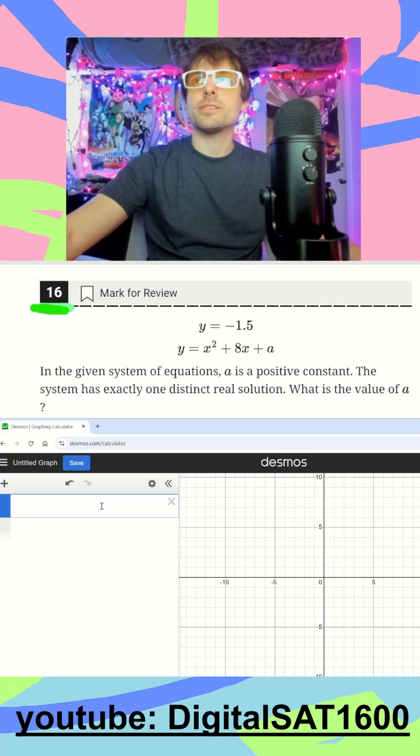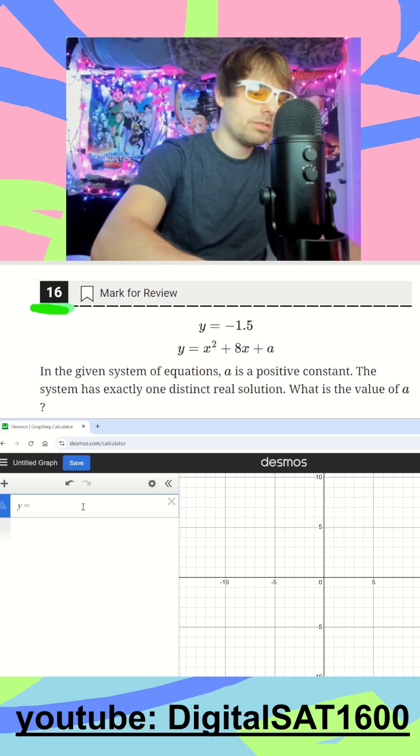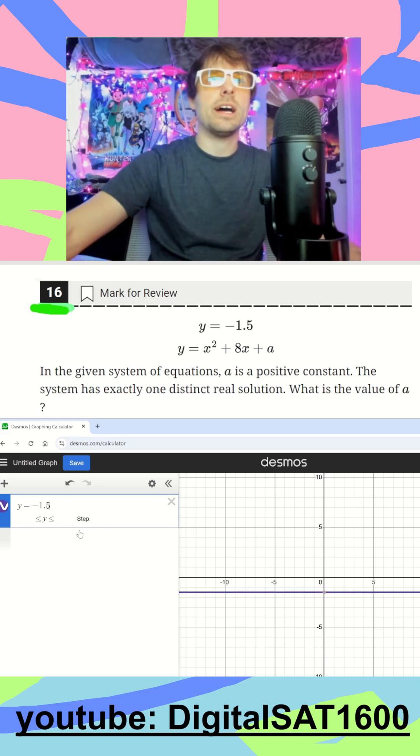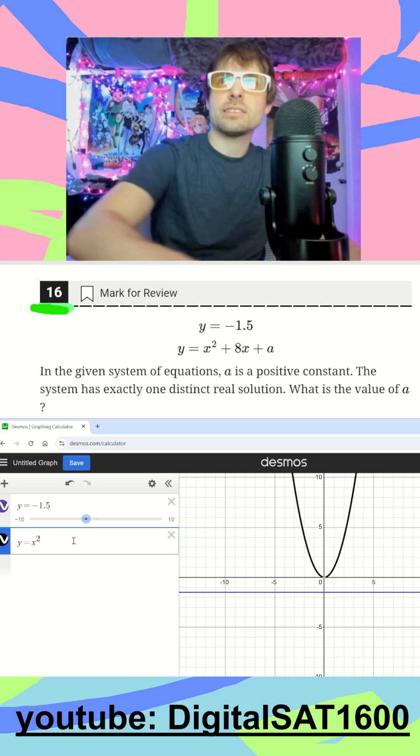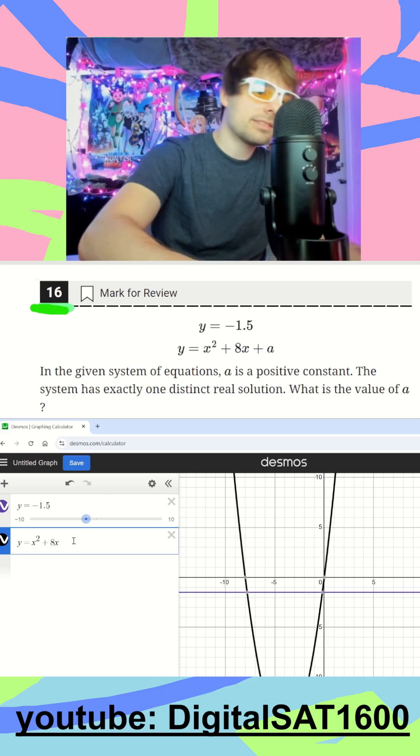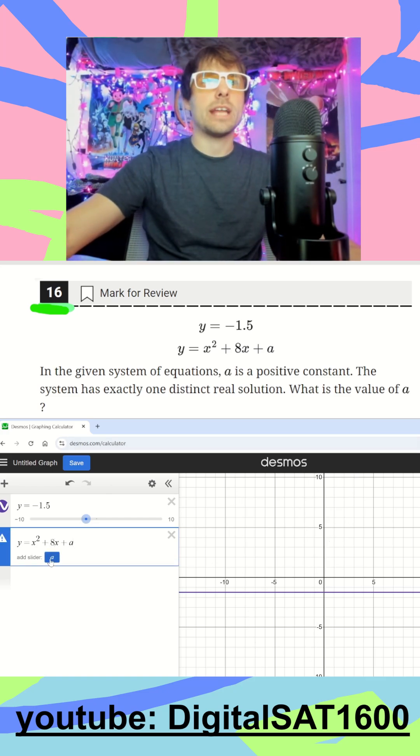I see a system of equations with one solution. Let's jump on Desmos. I type in my first function, negative 1.5 for y, and my second function, y equals x to the second plus 8x and then plus this a that we're going to add a slider for.